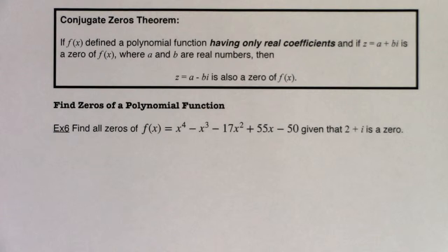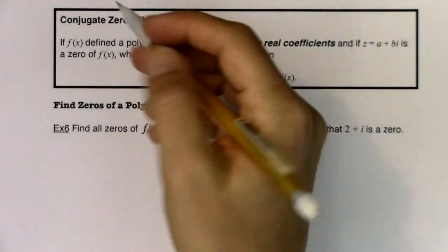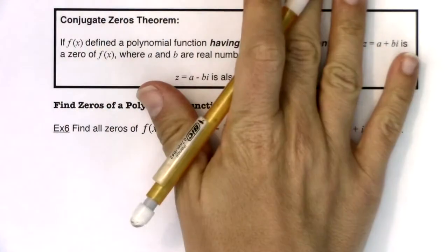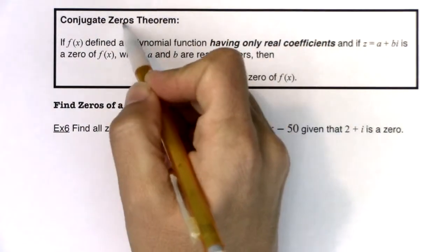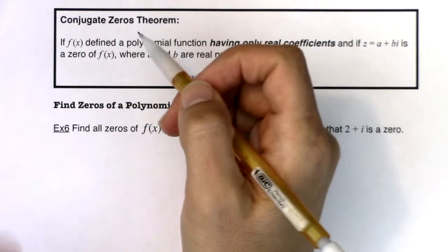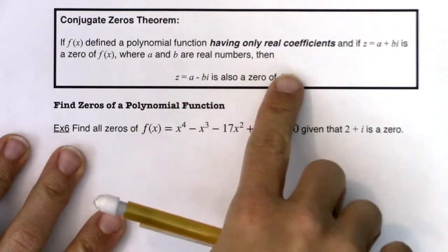Hey Math 31, welcome to example six. Here is where the real fun is about to begin. We're going to pick up something called the conjugate zeros theorem. And it's at this point I want to start making the distinction between zeros and x-intercepts. So for this entire section and really the entire class, I've been saying zeros and x-intercepts are the same thing, and for the most part they are. But here's where we're going to get into a slight discrepancy.